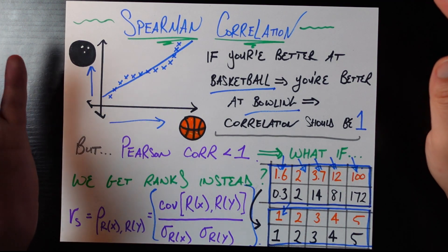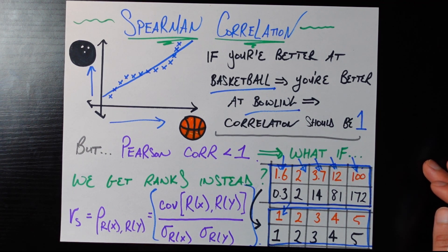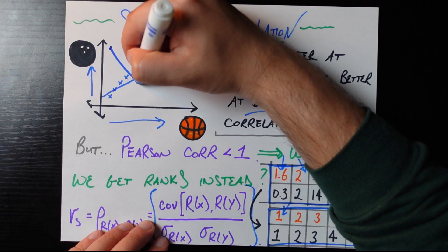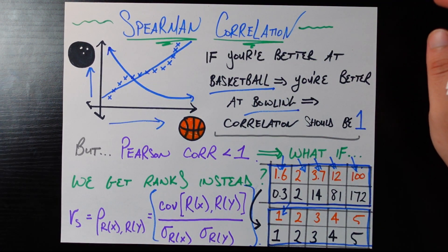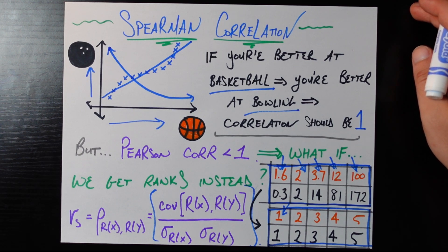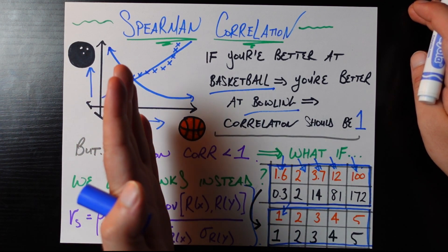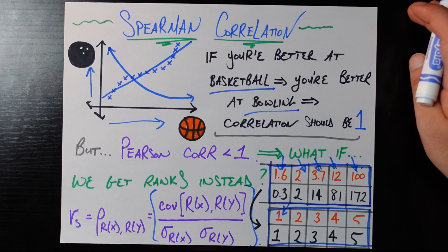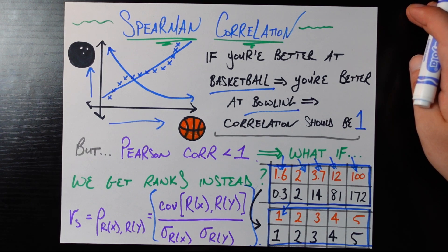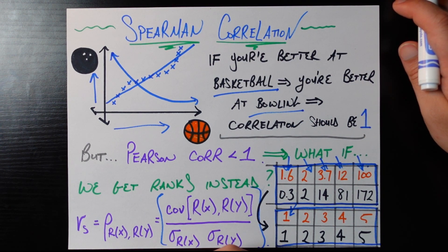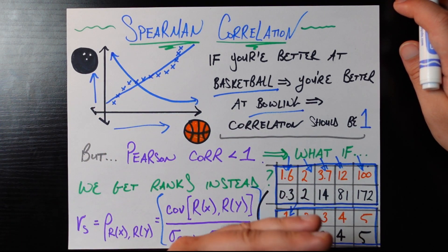You'd have a perfect Spearman correlation of one if the ranks perfectly line up, as they do in this case. You'd have negative one if the ranks are exactly opposite — five, four, three, two, one against one, two, three, four, five — indicating a perfectly negative relationship. And just like Pearson, you'd have zero Spearman correlation if there's no relationship between the ranks. Most intuitions from Pearson carry over. The key difference is we're relaxing the linearity assumption — we don't care if the relationship is linear, S-shaped, or exponential. We just care whether rank differences on one variable agree with rank differences on the other.